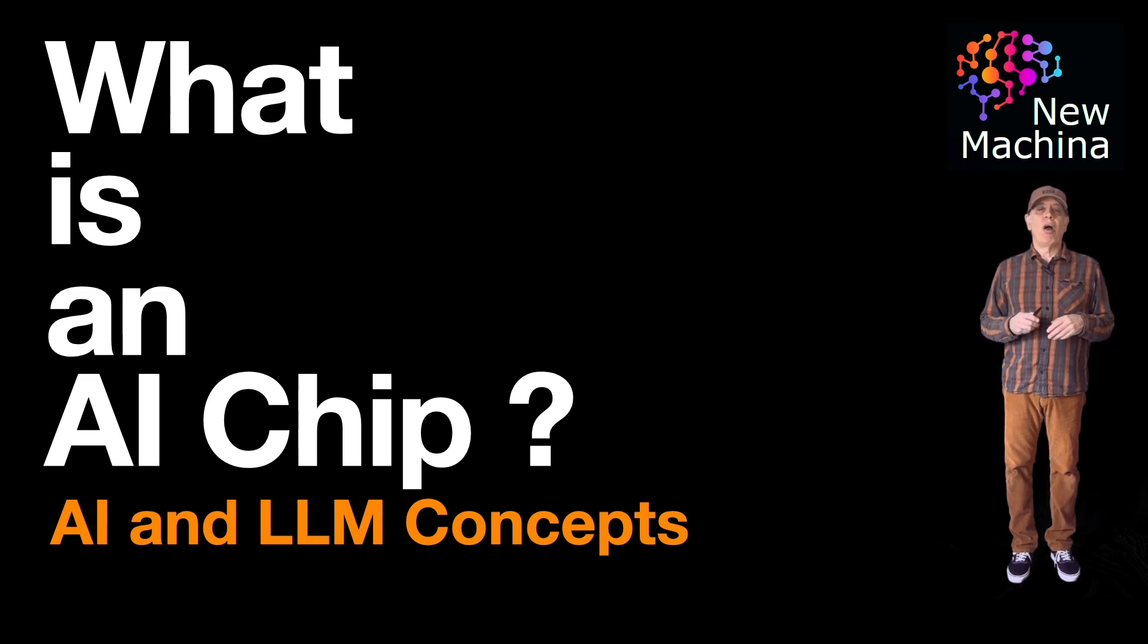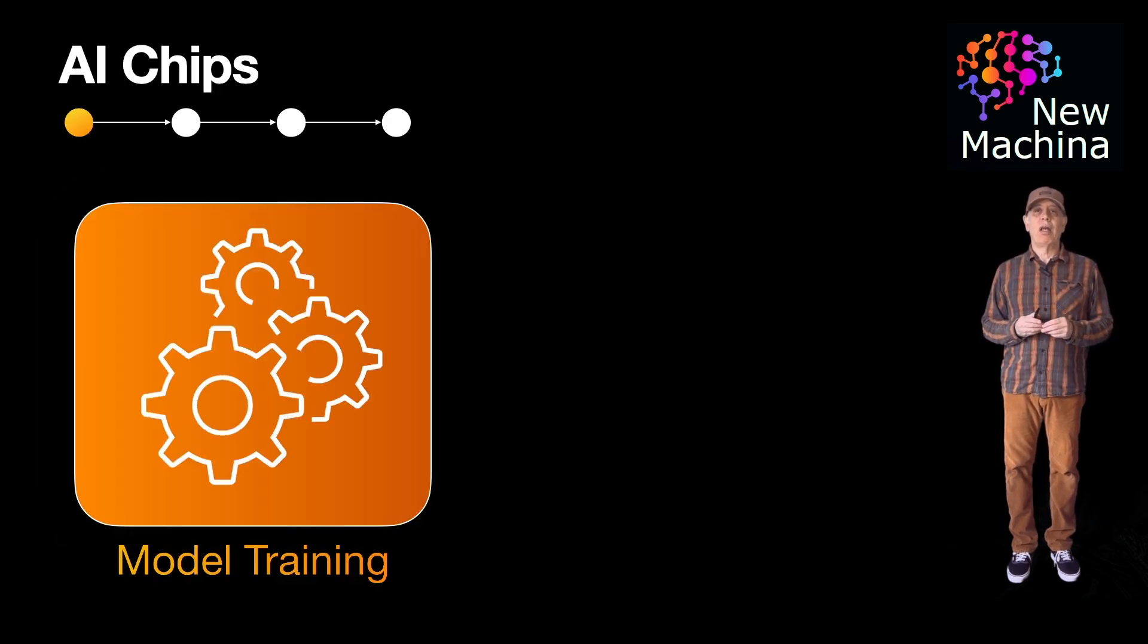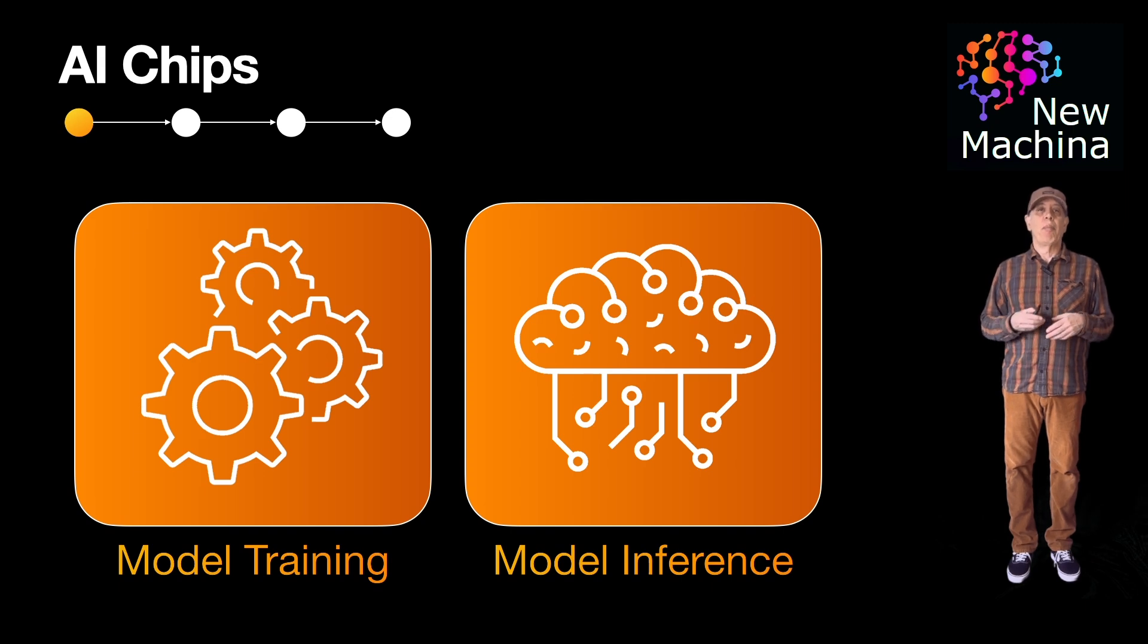AI chips are specialized processors designed to accelerate AI tasks, particularly in the areas of deep learning. Unlike general purpose CPUs, these chips are optimized to handle computational workloads required for model training and inference. But what is it about these AI chips that makes them a much better fit for AI workloads? Why does AI training and inference need their own dedicated specialized chips?